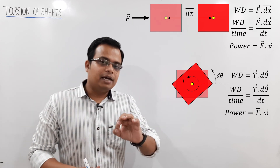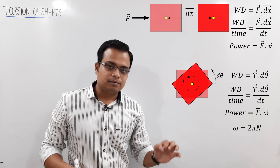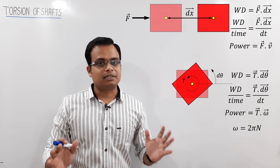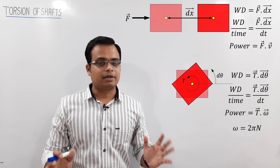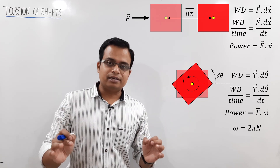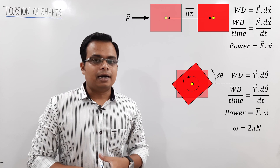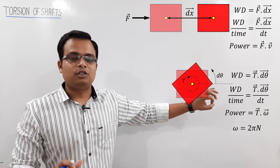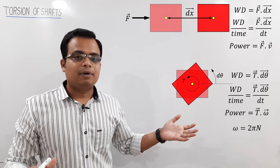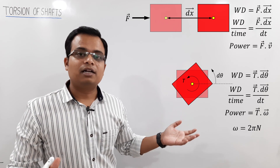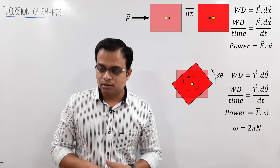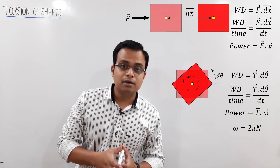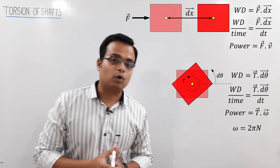We will follow the SI system and always use N in rotations per second, since power is work done per second — that is watts, i.e., Newton·meter per second, or joules per second.